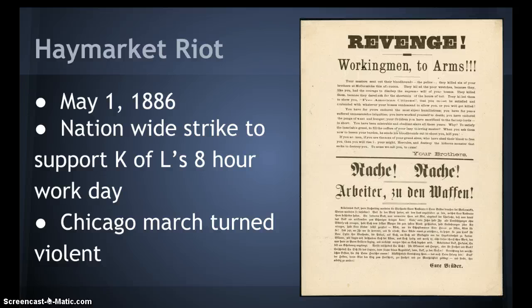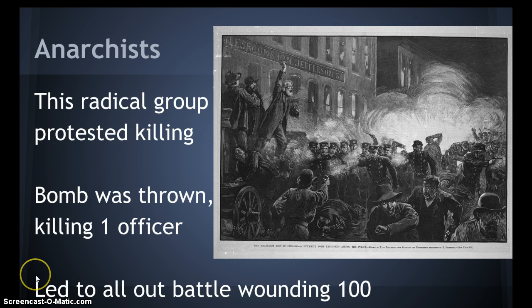May 1st, 1886 was a nationwide strike to support the eight-hour workday. In Chicago, the local Knights of Labor led a march of 80,000 workers. The police intervened and it turned violent — the police killed four strikers. A local anarchist group met to protest. Remember, an anarchist group believes in no government — they're the most radical, and it's what employers would fear the worst.